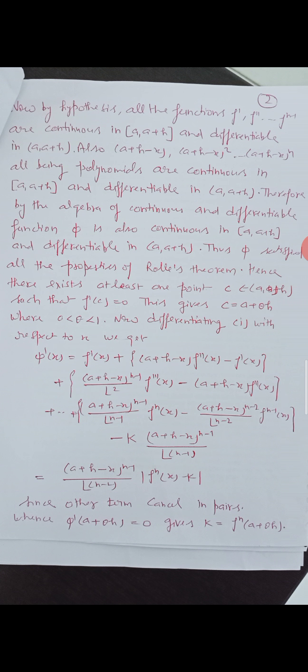Now by hypothesis, all the functions f', f'', ..., f^(n-1) are continuous in [a, a+h] and differentiable in (a, a+h). Also, (a+h−x), (a+h−x)², ..., (a+h−x)^n, being polynomials, are continuous in [a, a+h] and differentiable in (a, a+h). Therefore by the algebra of continuous and differentiable functions, φ is also continuous in [a, a+h] and differentiable in (a, a+h).